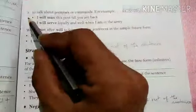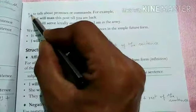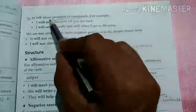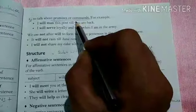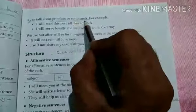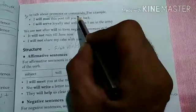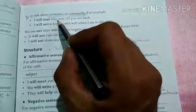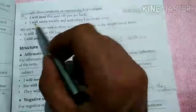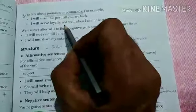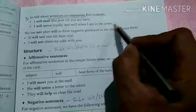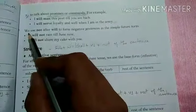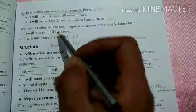Another use of simple future tense is to talk about promises or commands. The promises we make are about what we will do in the future. For example: 'I will man this post till you are back.' And 'I will serve loyally and well when I am in the army.' These are promises expressed in simple future tense. We use not after will to form negative sentences — sentences with no or not. After the helping verb will or shall, we use not, then V1, to change affirmative sentences into negative.